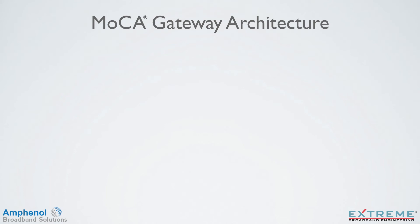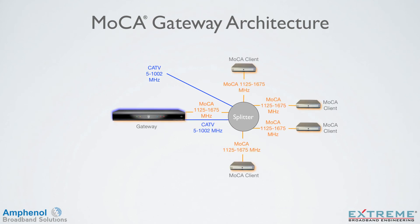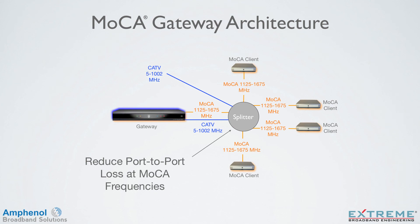Next we'll look at the MoCA gateway splitter. MoCA gateway architecture is becoming very popular with MoCA home networking. This is where a MoCA gateway device is used as the main DVR for recording and shares its content with MoCA clients. The gateway needs to receive cable TV signals to record content and then shares its content to the MoCA clients via the MoCA frequencies. With this architecture, we can use it to our advantage to provide better MoCA losses and help eliminate ingress into the return plant. If there's no need for cable TV frequencies to the MoCA clients, filtering out the cable TV frequencies to those outlets means any ingress at the cable TV frequencies cannot travel back on the return path, thus reducing ingress in the return plant. If the splitter ports feeding the MoCA clients don't need cable TV frequencies, we can tune those ports only for MoCA frequencies and reduce the port-to-port loss at the MoCA frequencies.